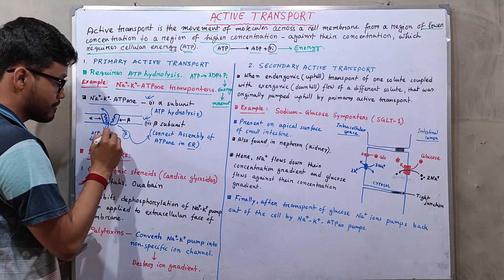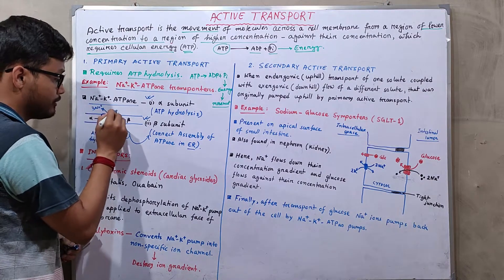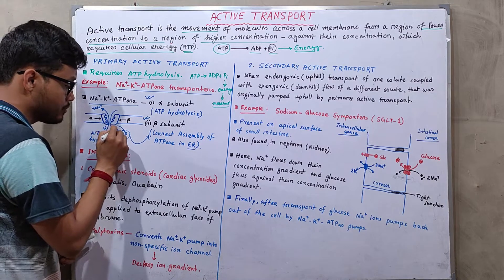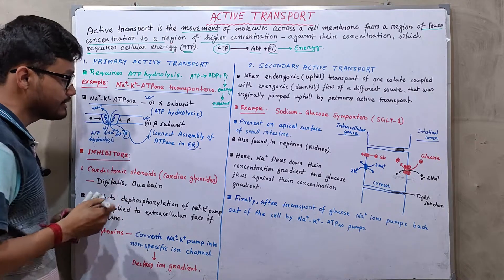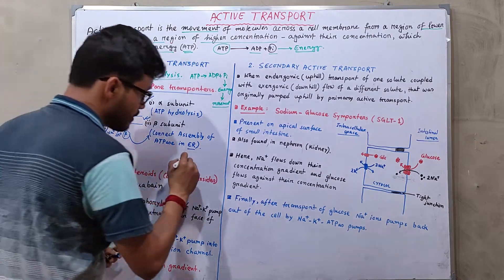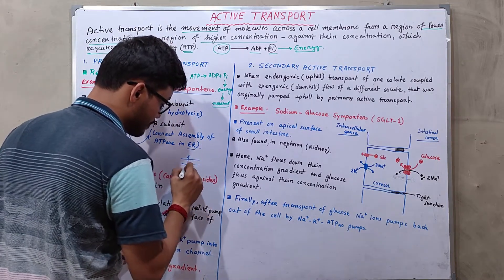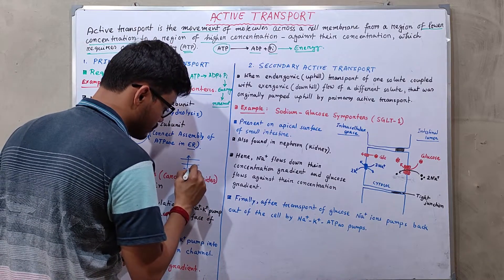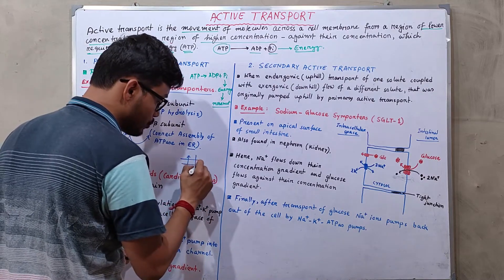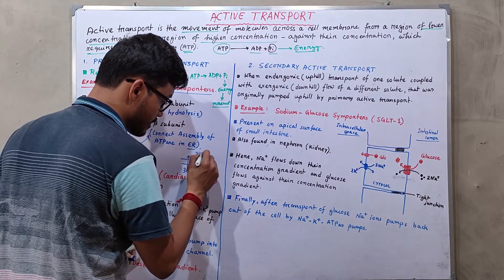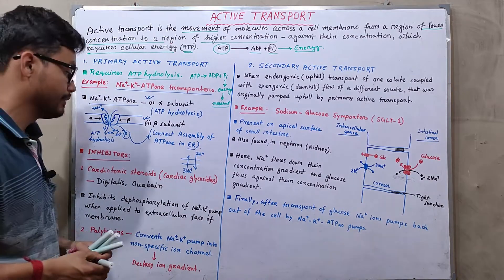Three sodium ions are transported out of the cell and two potassium ions are transported into the cell. This is a movement of three sodium ions from intracellular to extracellular, and two potassium ions from extracellular to the cytosolic phase of the cell.